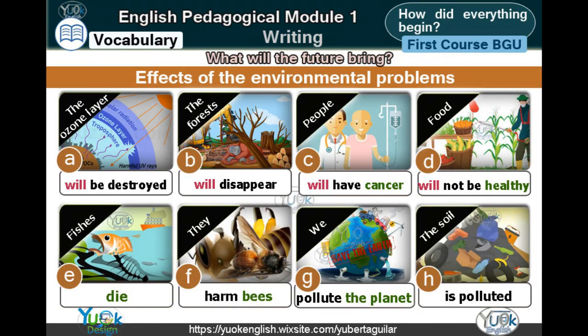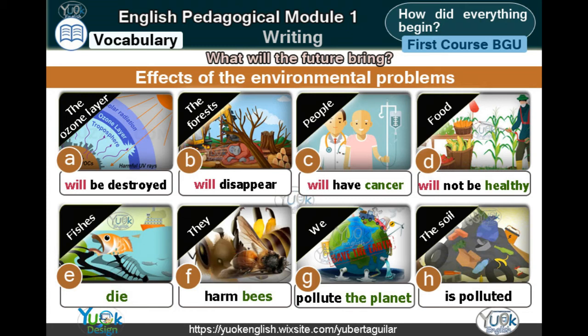Effects of the environmental problems: Will be destroyed. Will disappear. Will have cancer. Will not be healthy. Die. Harm bees. Pollute the planet. Is polluted.